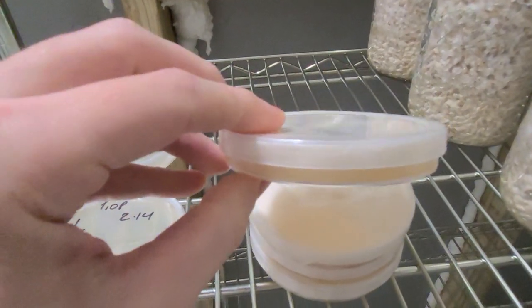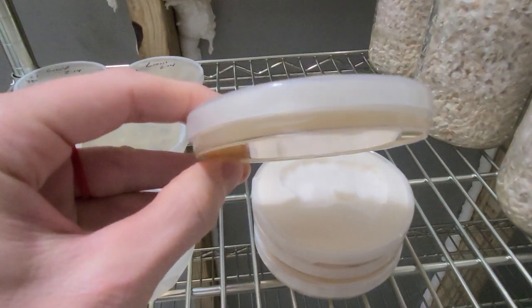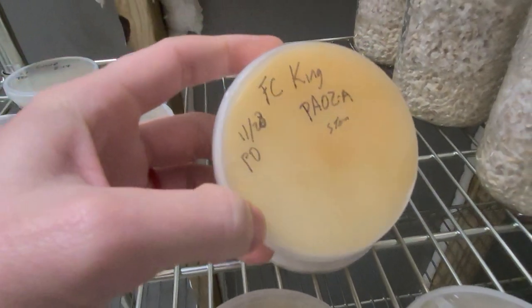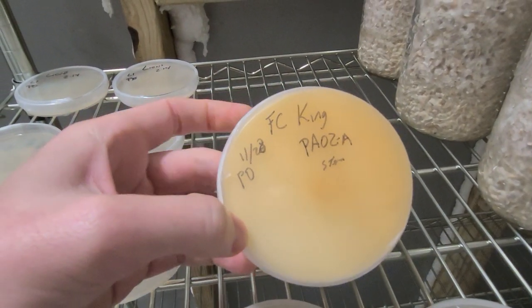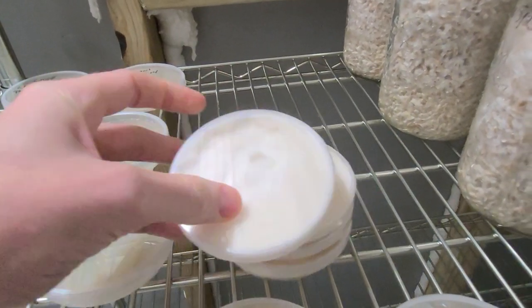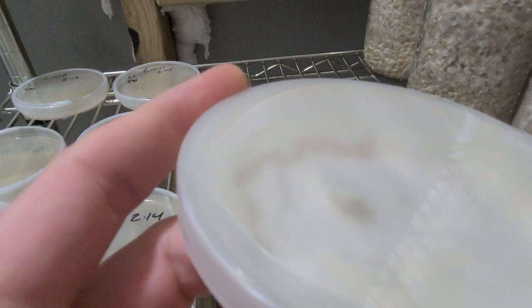These were spare plates I ended up not needing and just left them to colonize. You can see how well the parafilm works at securing the lid without suffocating the culture. Even with the overgrowth, the culture has not escaped the plate. Not to say that it can't, because it definitely can and will with enough time.